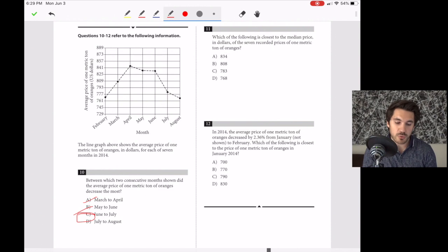Number eleven. Which is closest to the median price in dollars of the seven recorded prices? The median is the middle price when lined up from least to greatest. We have seven points, so we want the fourth highest. February and August are the lowest two, then comes July. March appears to be the fourth lowest, which is about 808. So that is our median.